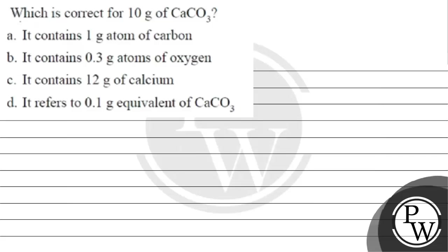Let's read this question. The question says which is correct for 10 grams of calcium carbonate. Option A: it contains 1 gram atom of carbon. Option B: it contains 0.3 gram atoms of oxygen. Option C: it contains 12 grams of calcium. Option D: it refers to 0.1 gram equivalent of calcium carbonate.